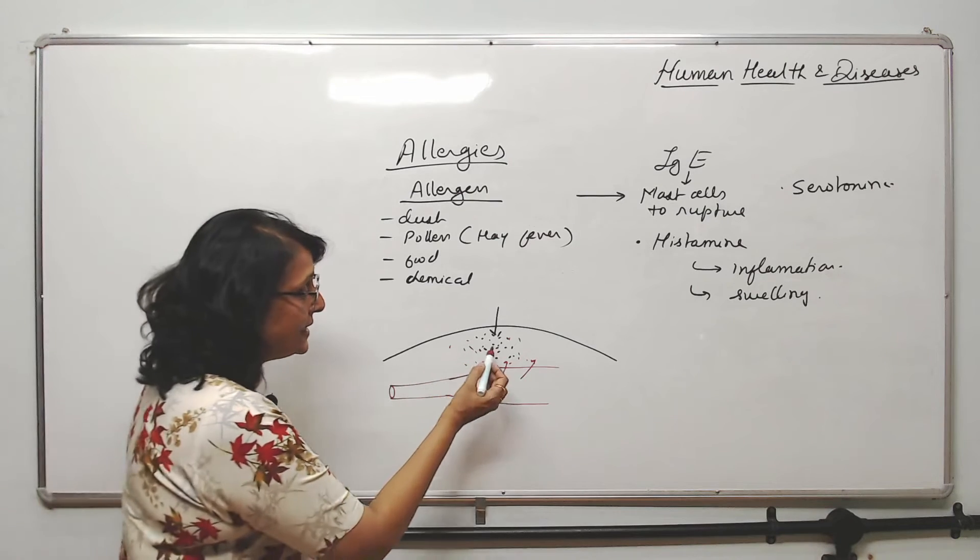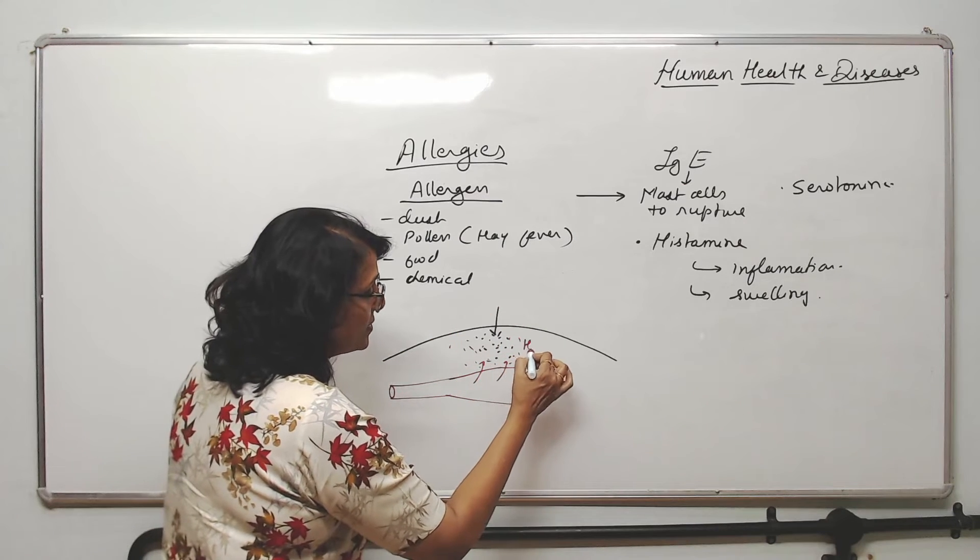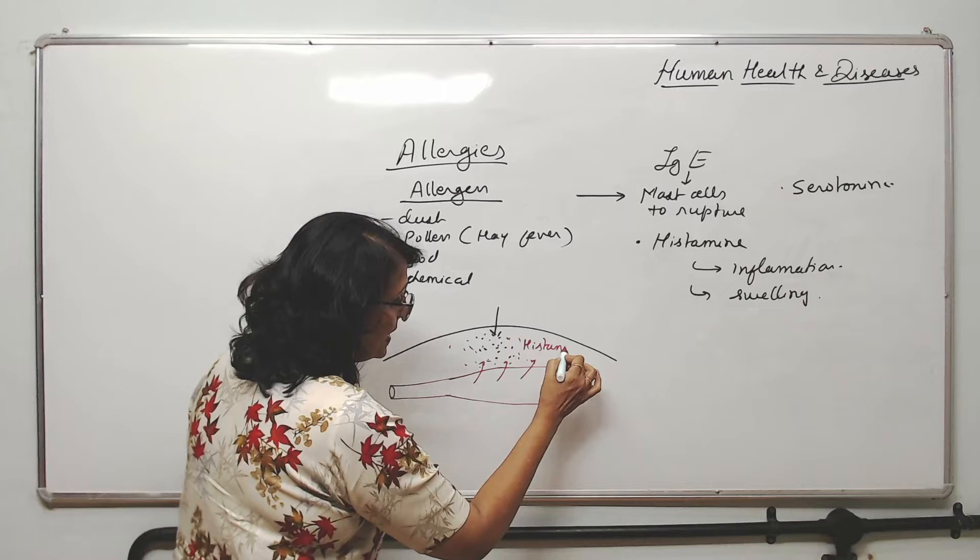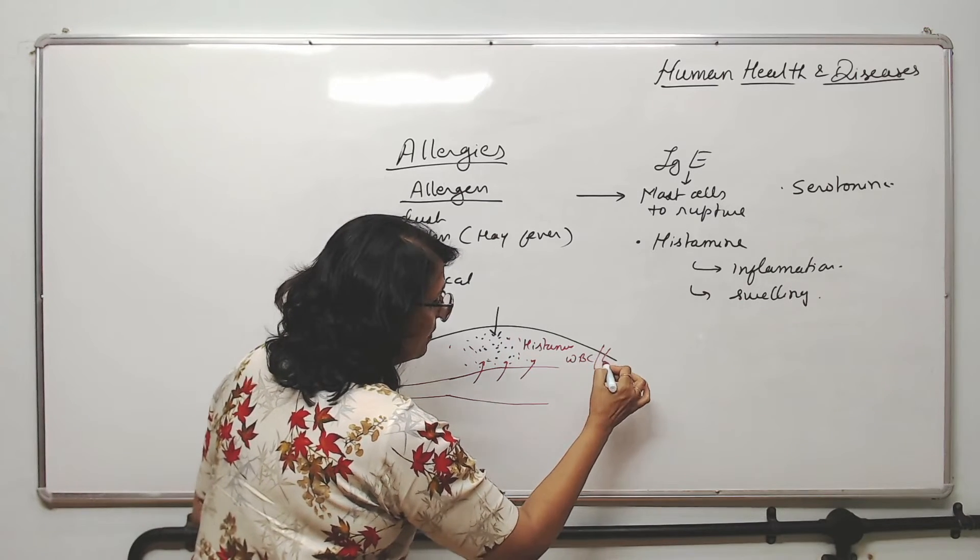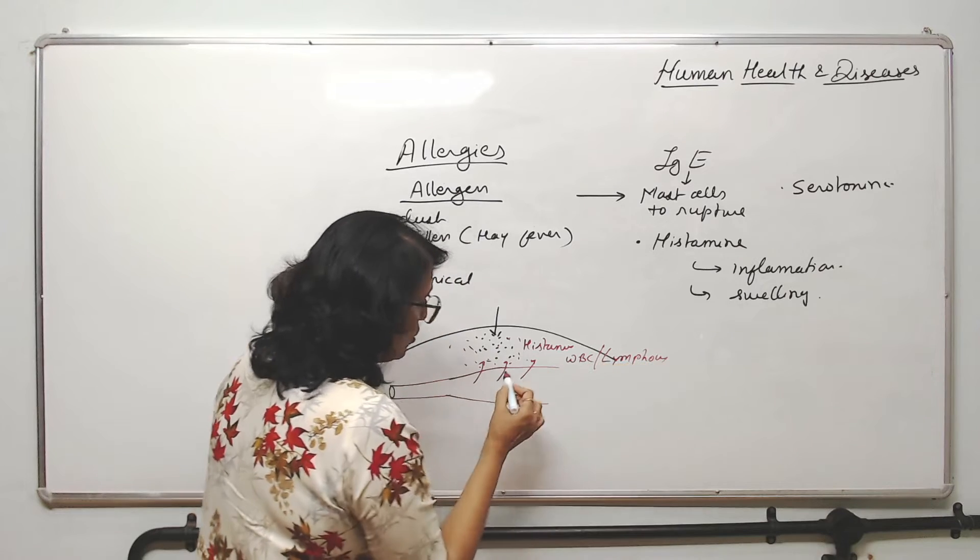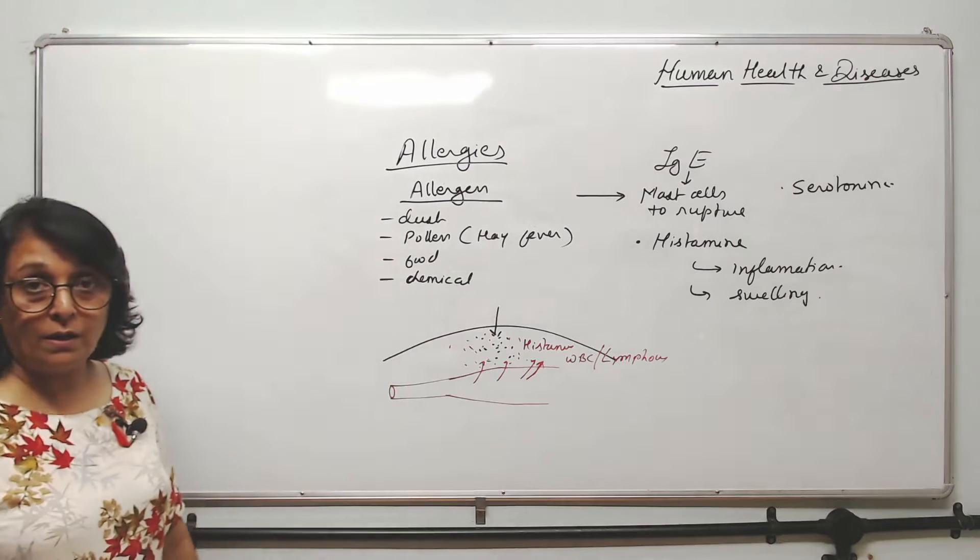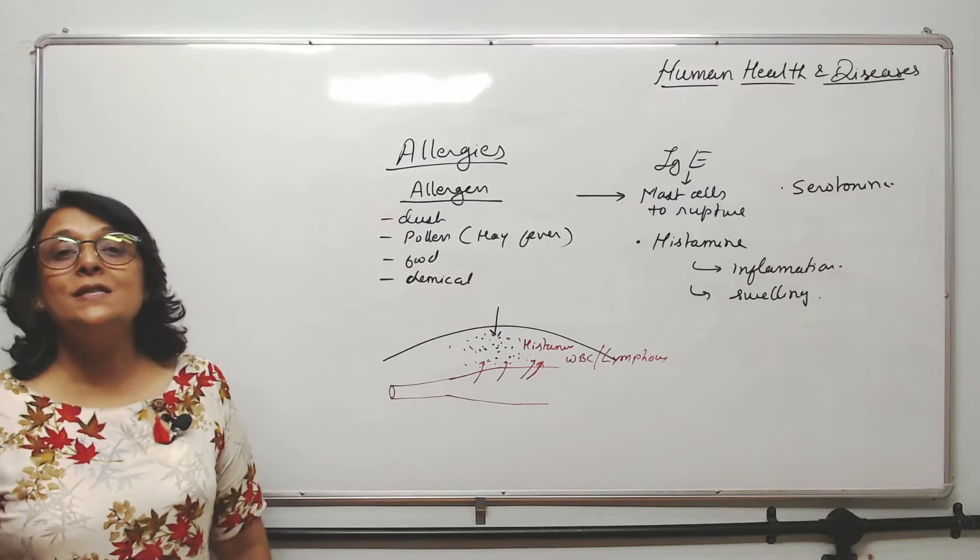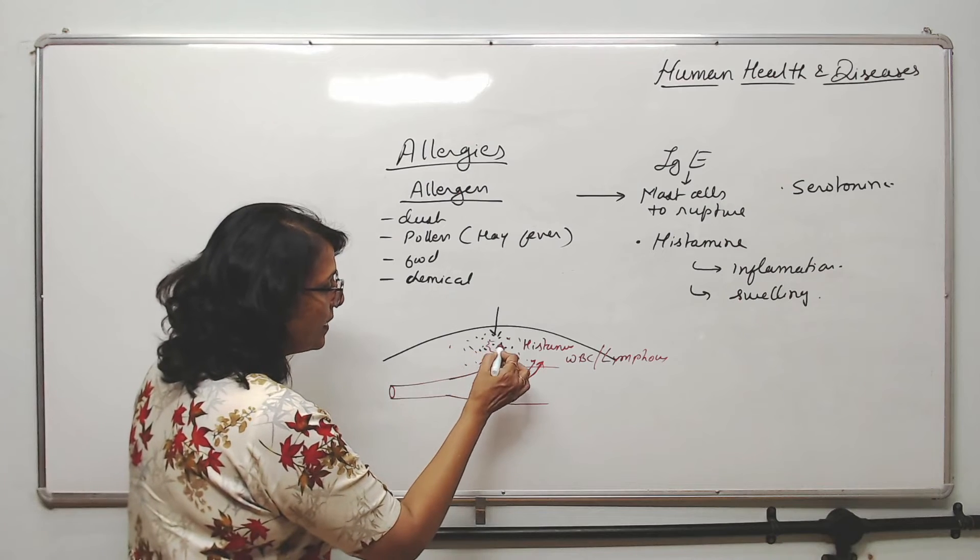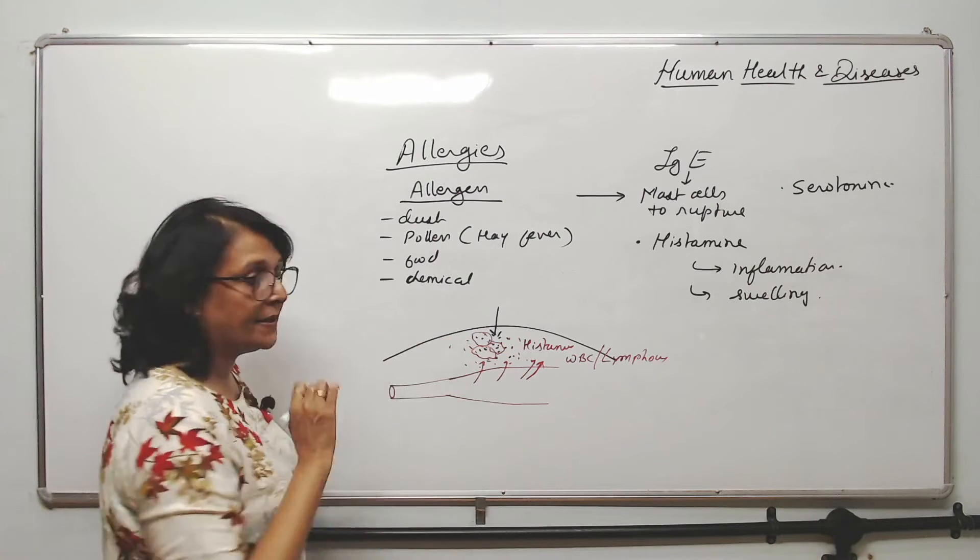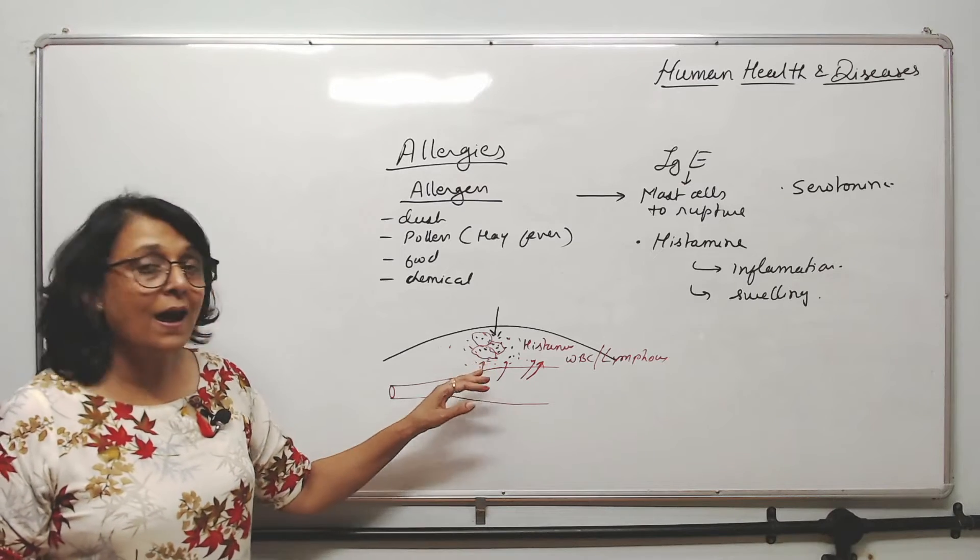And these substances like histamine, when histamine comes here, this histamine attracts WBCs, lymphocytes. So all these lymphocytes, they can squeeze out through the capillaries. That is known as diapedesis. So when the lymphocytes come here, they are going to engulf these particles. And that is how these substances are reduced.